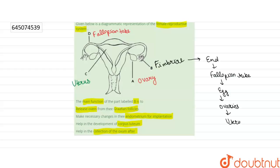Fimbriae are connected to the ovary. What happens is that an oocyte is released from the ovary into the peritoneal cavity during ovulation.